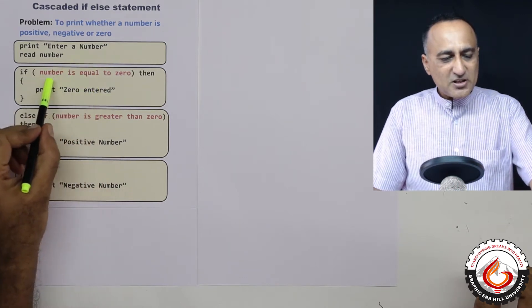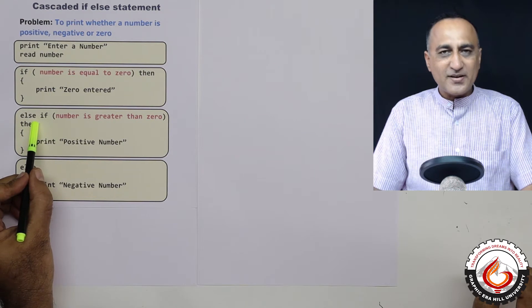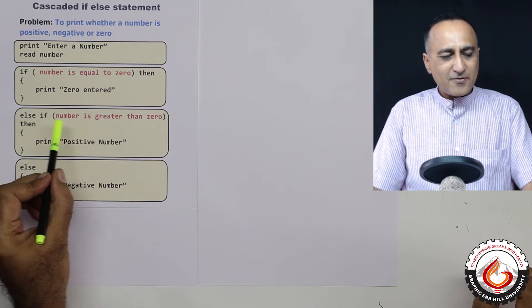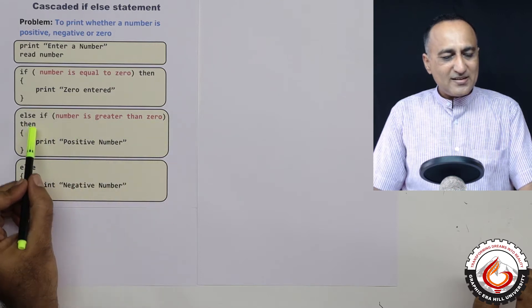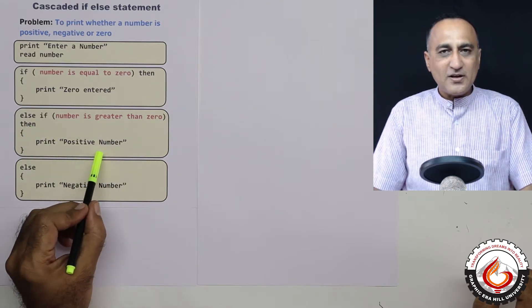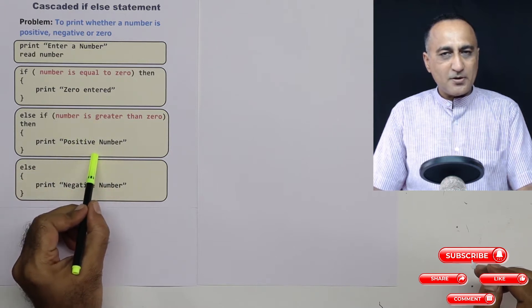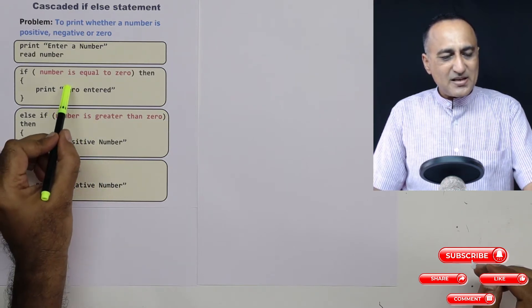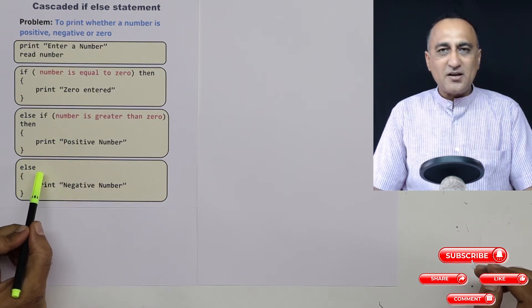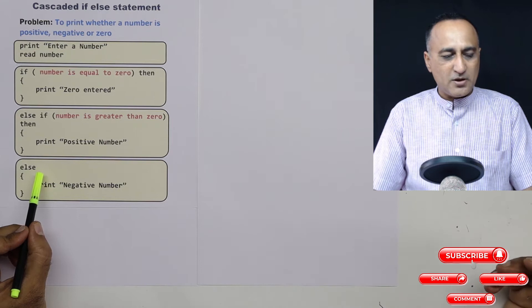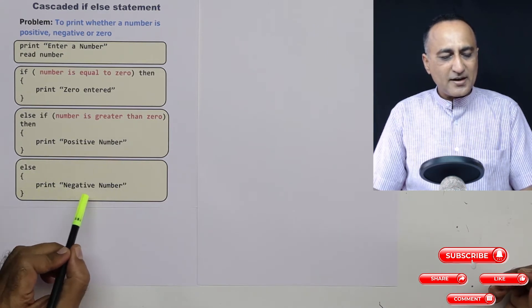If this condition is false, that means the number is not zero, I will come to the else-if condition. Else if number is greater than zero, then the number has to be a positive number, so it will print 'positive number'. In case the number is neither zero nor positive, then the number must be a negative number because there is no other possibility, and the else statement will print 'negative number'.